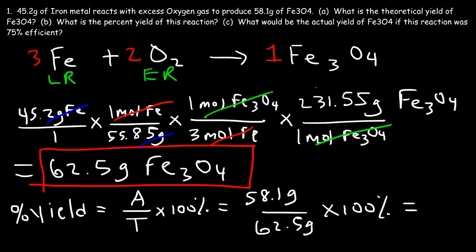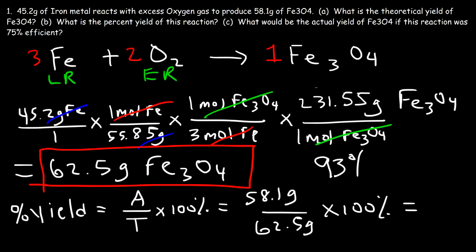We divide 58.1 by 62.5 and then multiply that result by 100. The percent yield is 92.96%, which is roughly about 93%. So that's the percent yield — this particular reaction is 93% efficient.